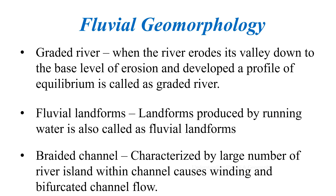The next concept is the braided channel. A braided channel is characterized by a large number of river islands within the channel, causing widening, meandering, and bifurcated channel flow. Within such a channel, temporary or permanent river islands are located, making the channel widened and winding, which causes bifurcated flow. This type of channel is called a braided channel.